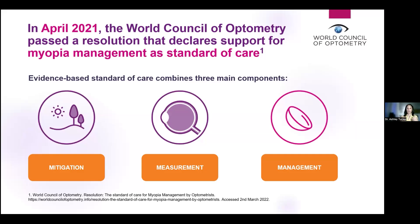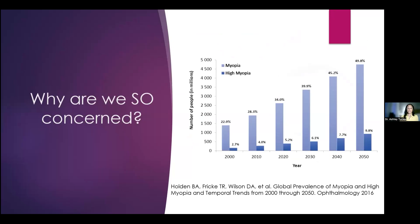Why are we so concerned? By the year 2050, half of the world's population will be myopic, and 10% of those patients will be highly myopic — placing them at a very high risk for ocular pathologies. And bringing that closer to home, by 2030, 50% of North America is predicted to have myopia. The best time to start myopia management is at the time of onset, because there is no safe level of myopia. Myopia is not really a normal process — it's elongation of the eye beyond what is normal.